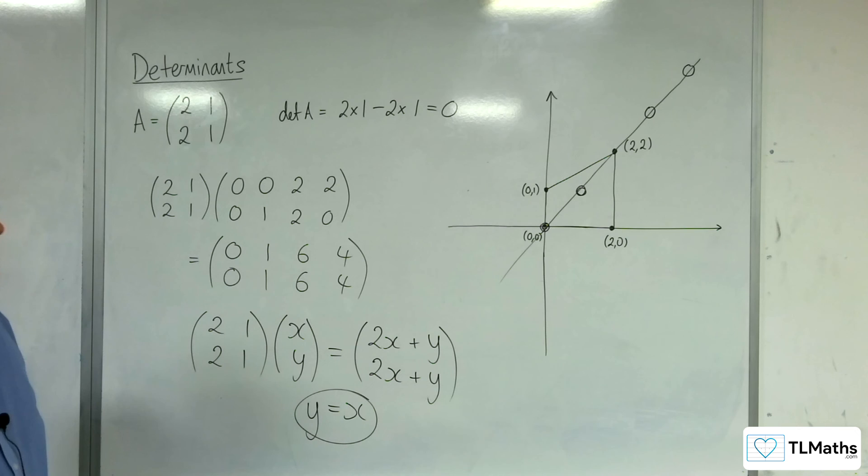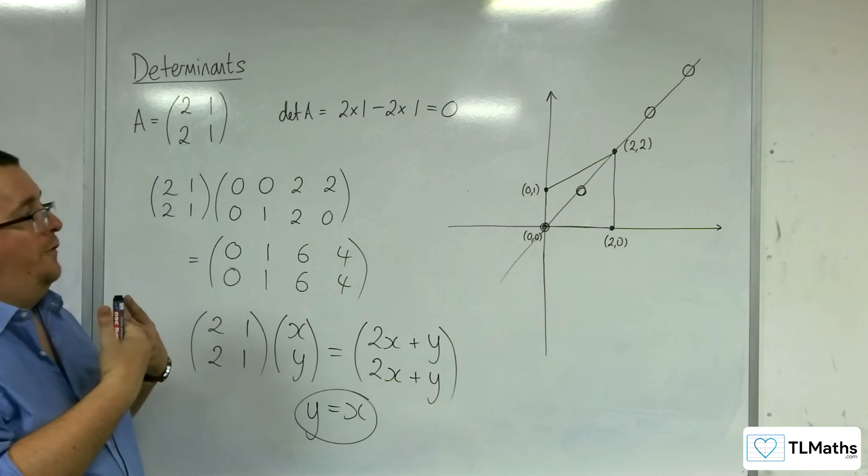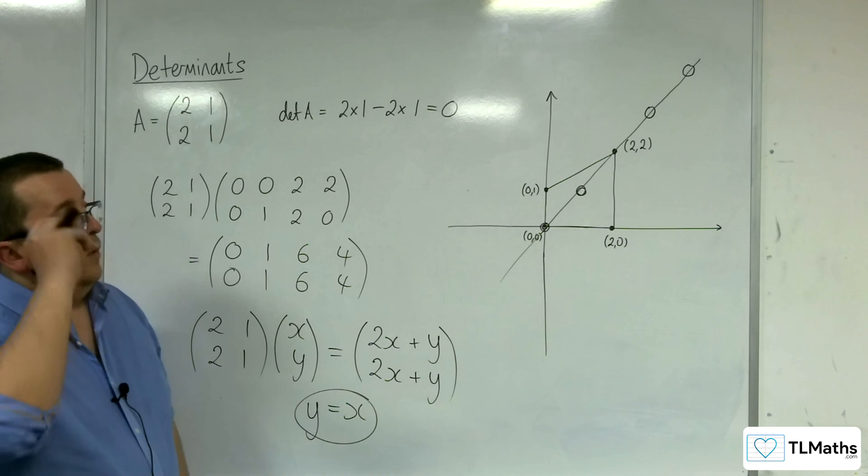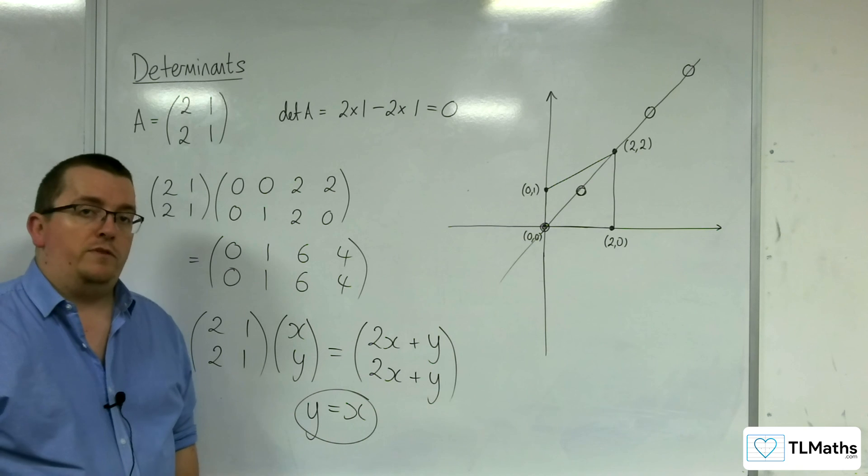OK, so the determinants of value 0 will map all points onto a line going through the origin.